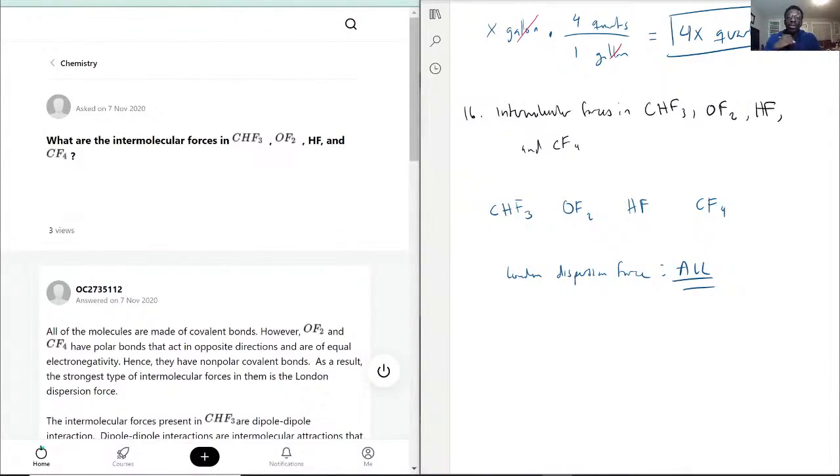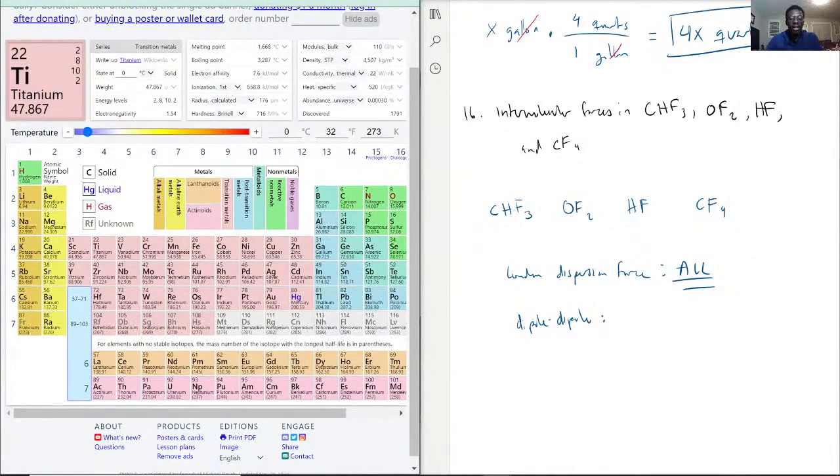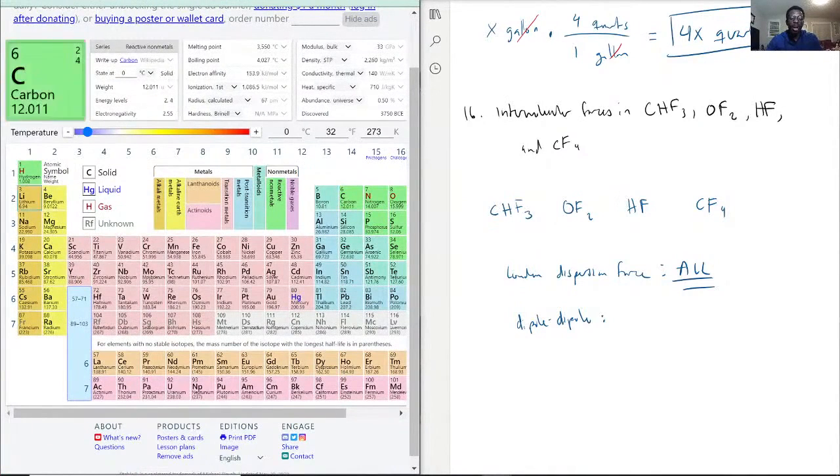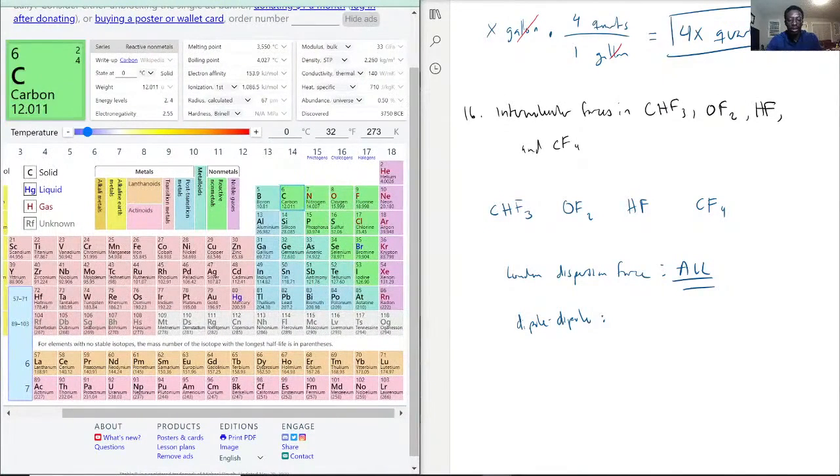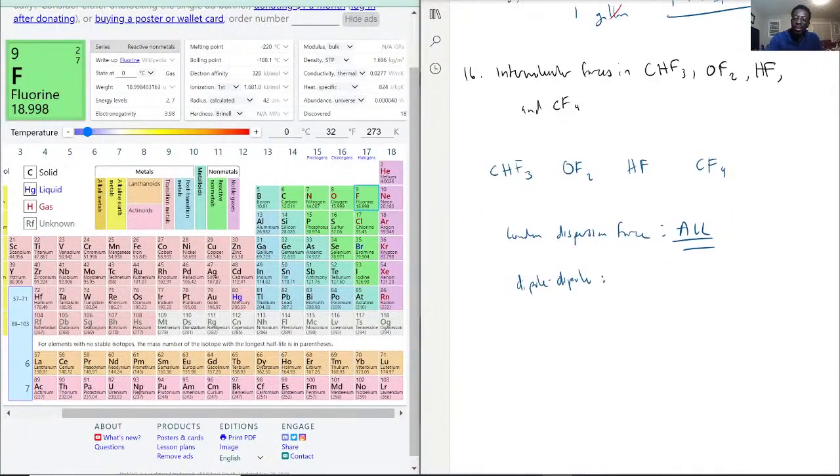The next type of intermolecular force is dipole-dipole. This is only present when there's a big enough electronegativity difference between the elements involved. For CHF3, carbon is bonded with hydrogen, but it's also bonded with fluorines. CHF3 looks like this. The hydrogen is not attached to the fluorine because fluorine is already full.